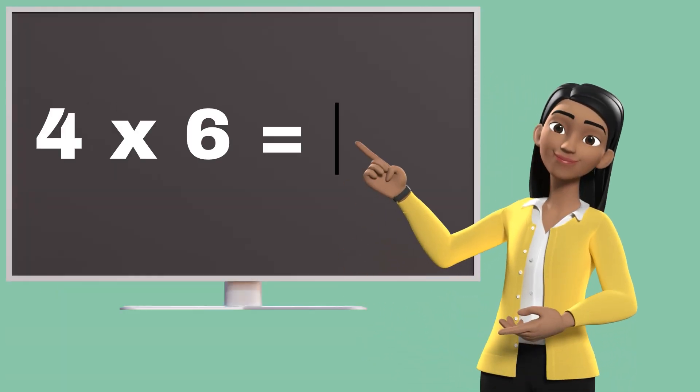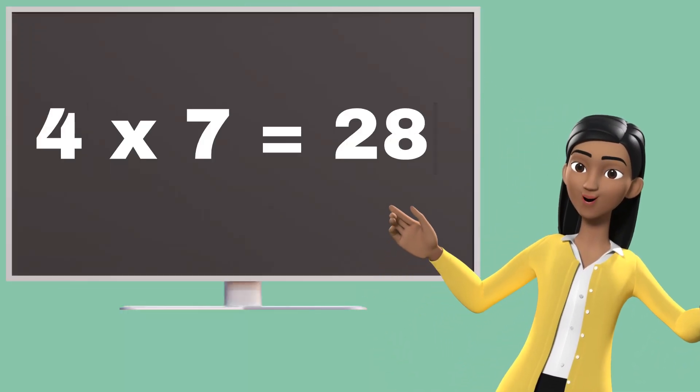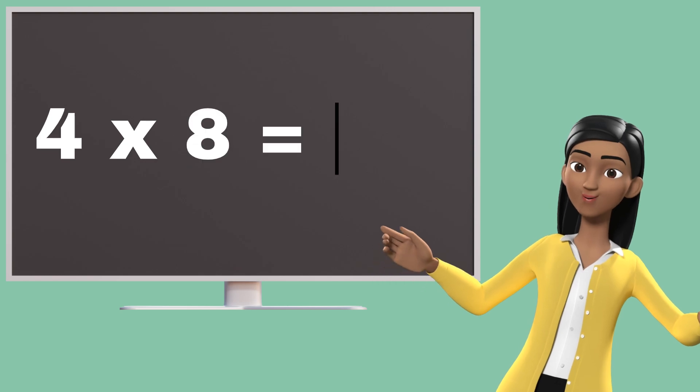Four sixes are twenty-four. Four sixes are twenty-four. Four sevens are twenty-eight. Four sevens are twenty-eight.